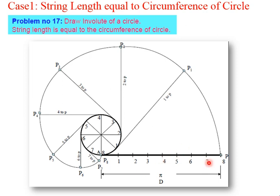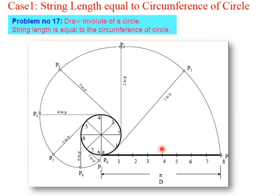After dividing the circle and the tangent line into equal parts, draw tangents at every division point on the circle. C is the center; draw a perpendicular to radius C1 at point 1 — this is automatically the tangent at 1. Draw a perpendicular to C2 at point 2, giving the tangent at 2. Similarly draw tangents at points 3, 4, 5, 6, and 7. The tangent line at point 8 already exists. The final point on the tangent line is named point P.